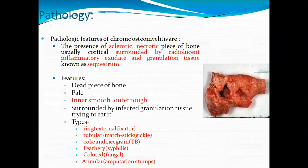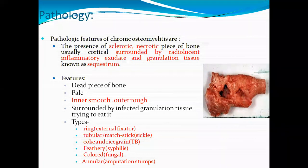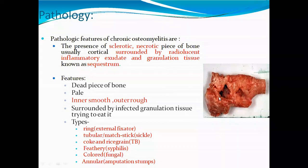Pathological features of chronic osteomyelitis: there is the presence of sclerotic necrotic pieces of the bone. In chronic osteomyelitis, these sclerotic necrotic pieces of bone are surrounded by radiolucent inflammatory exudate and granulation tissue, known as the sequestrum — also called sequesterium — which is the necrosis form of the tissue.